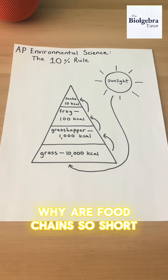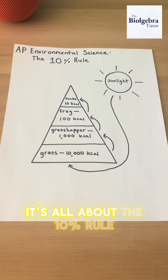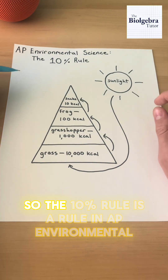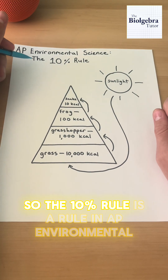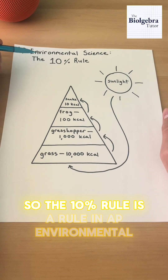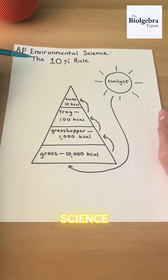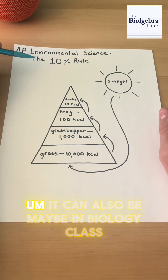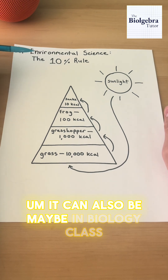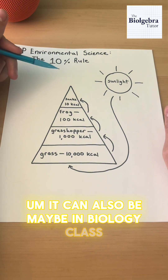Why are food chains so short? It's all about the 10% rule. The 10% rule is a concept in AP Environmental Science, and it may also come up in biology class.